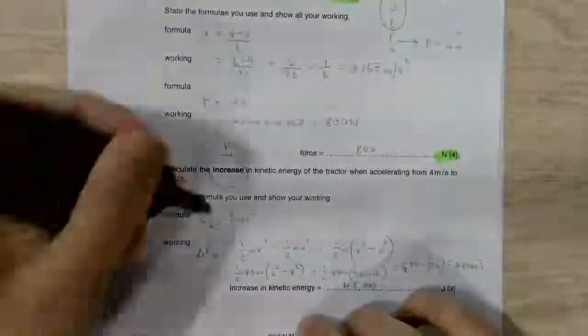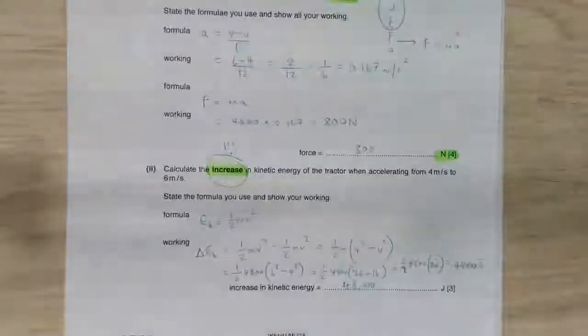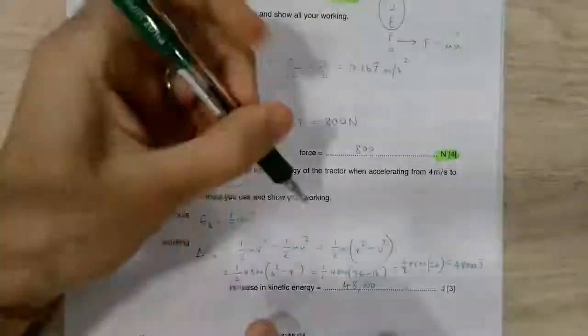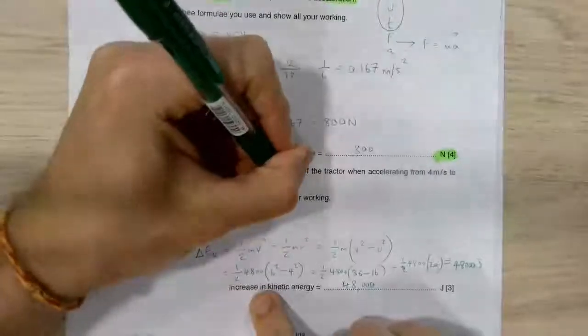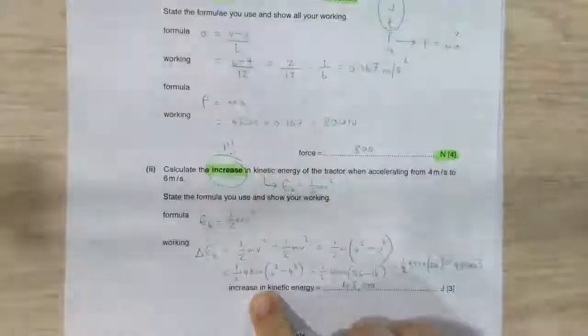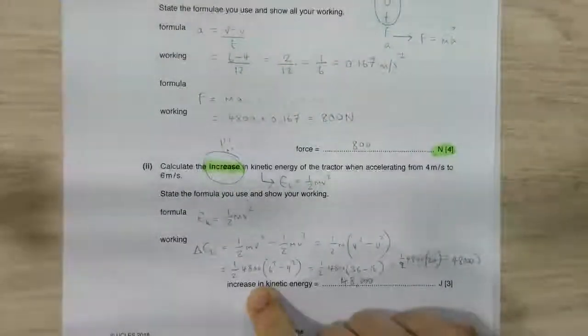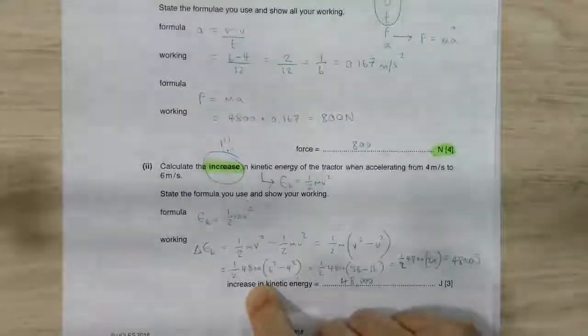You're then asked, you're given the same situation, but we want to know the increase in the kinetic energy of the tractor. Hopefully we're remembering now that kinetic energy is one of our slightly more complicated equations. We're not simply multiplying things together. We are multiplying the mass by the square of the speed and then dividing that by 2.